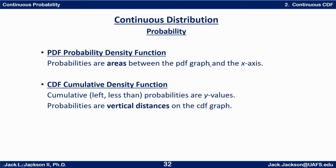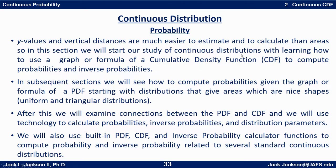Let's review a couple of things about continuous distributions and how they relate to probability. For the PDF — probability density function — probabilities are areas between the PDF graph and the x-axis. For the CDF — cumulative density function — the y-values are cumulative probabilities. So a cumulative or less-than probability is an actual y-value on the CDF, and in general probabilities are vertical distances on the CDF graph. Y-values and vertical distances are much easier to estimate and calculate than areas.